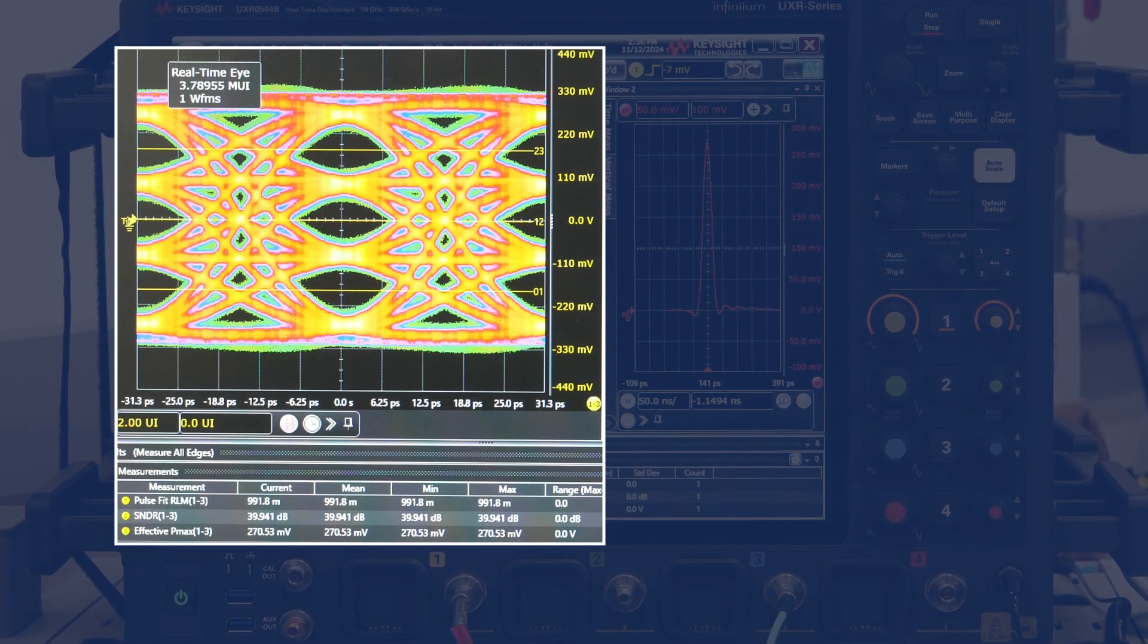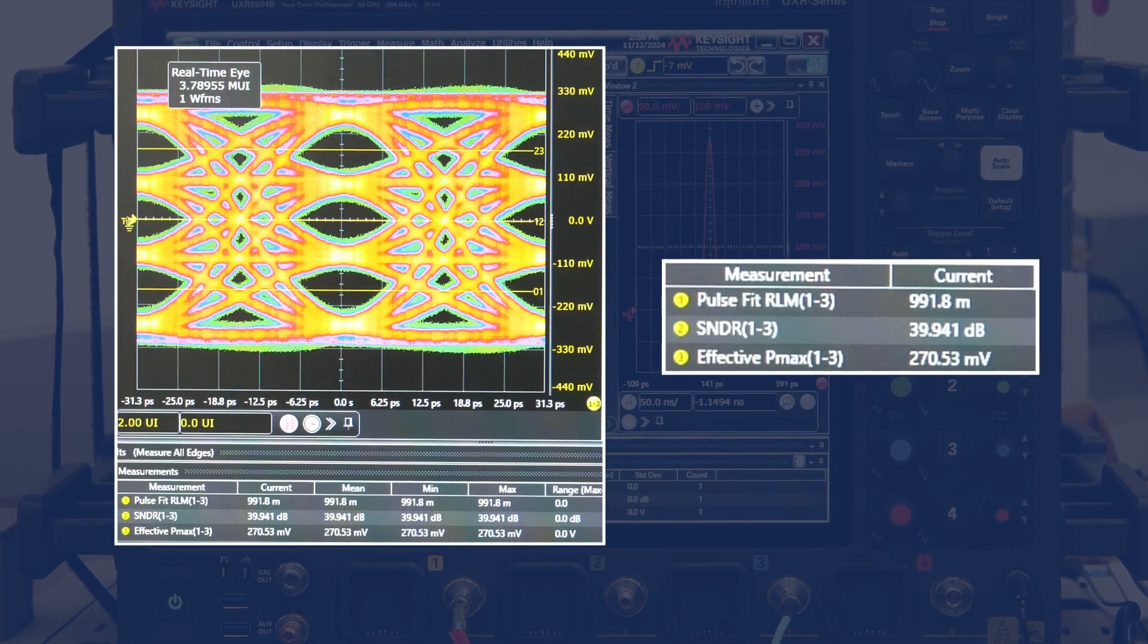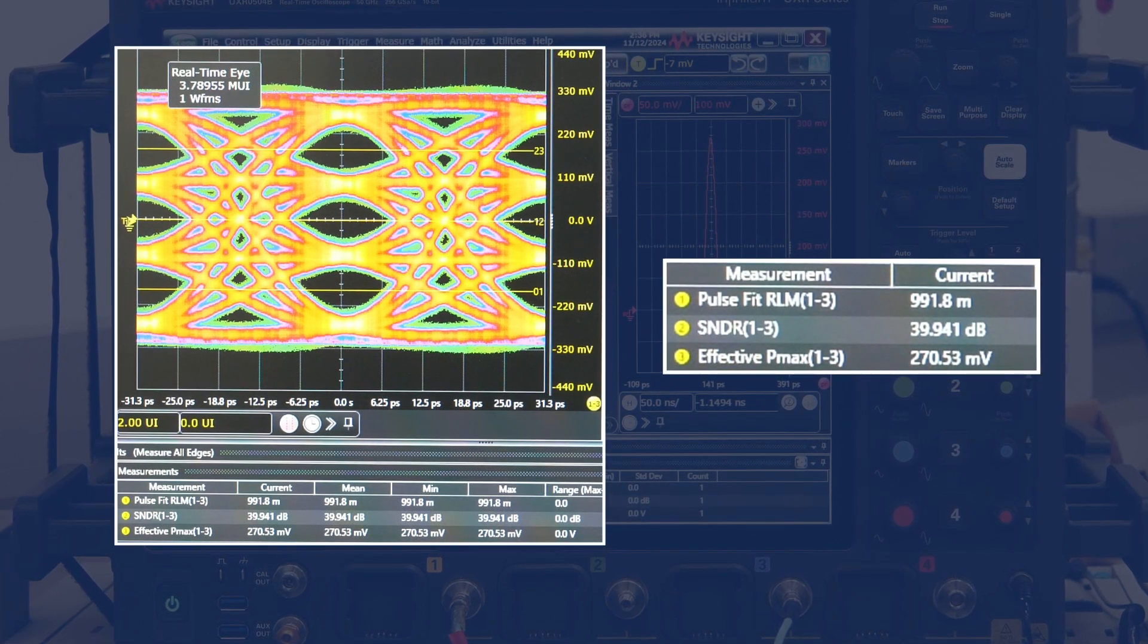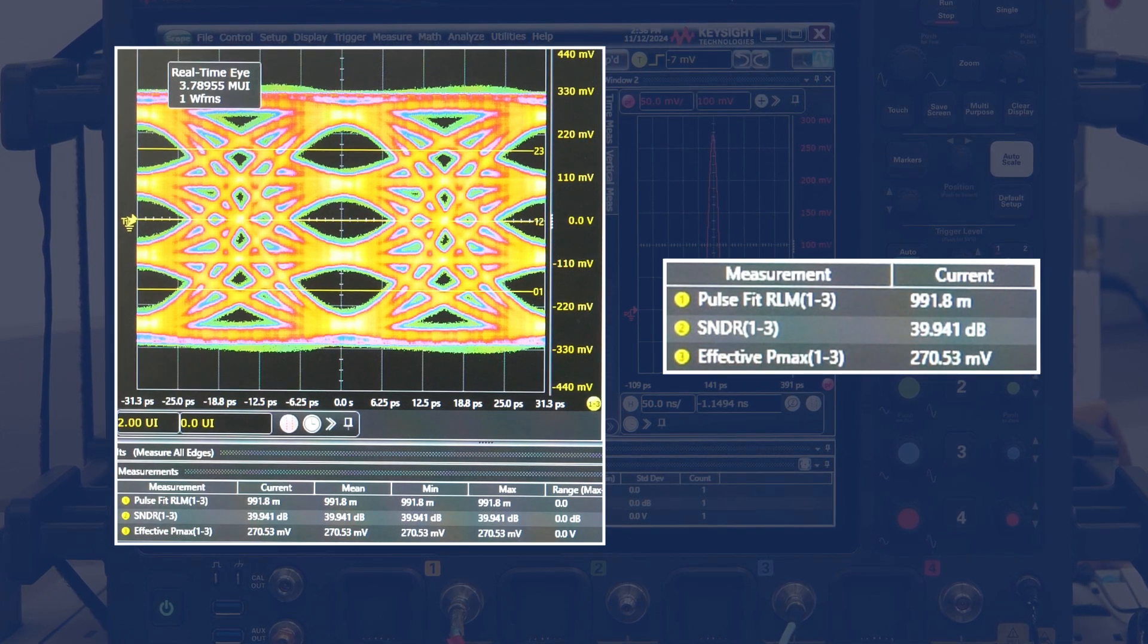With our PAM4 signaling, note the key metrics such as the RLM, which is standing at 0.99, and the SNDR at nearly 40 decibels, all in strict compliance to industry standards.